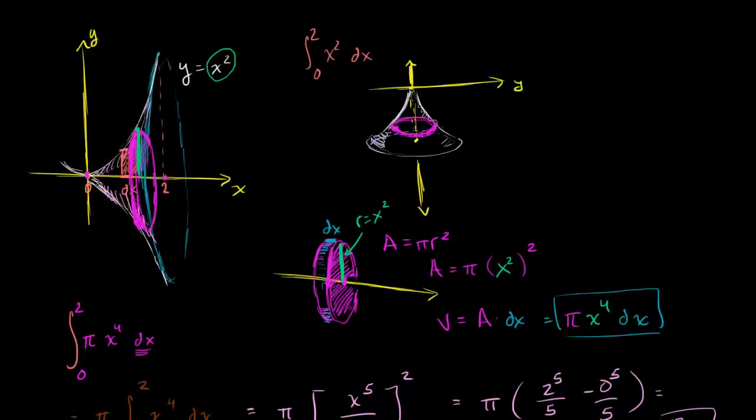What we're going to do in this video is generalize what we did in the last video and essentially end up with a formula for rotating something around the x-axis using what we call the disk method.